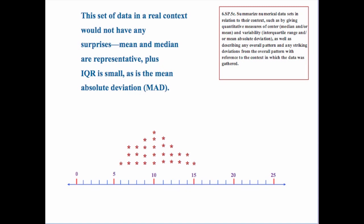Plus your interquartile range and your mean absolute deviation are going to be fairly small also because there's not much of a range — there's not a whole lot of variability here as far as your data. They're pretty closely packed together.